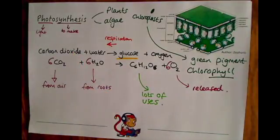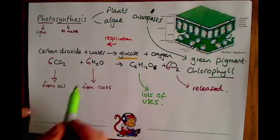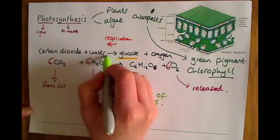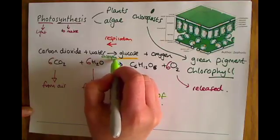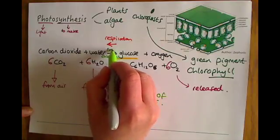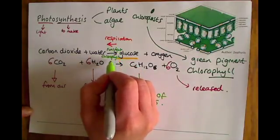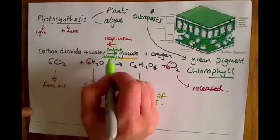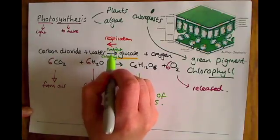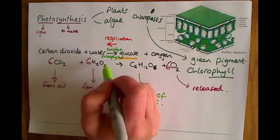Now sometimes on this photosynthesis equation you might see the words chlorophyll and sunlight just over the arrows there. Sometimes they're in, sometimes they're not. It just shows that these things aren't used up in the equation, but they are needed for the photosynthesis process to occur.